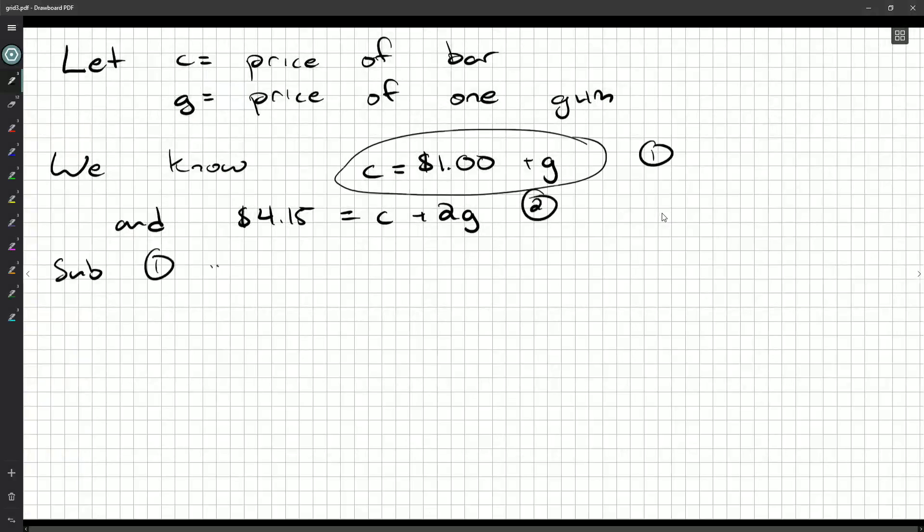We're going to get a single equation just in terms of g. So 4.15 = c, but we don't have a c, so it's one dollar plus a pack of gum plus two other packs of gum. Subtracting the one dollar from both sides and cleaning up: 3.15 = 3g. Three packs of gum cost three dollars and fifteen cents. Divide by three, and we get the cost of one pack of gum is $1.05.